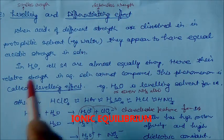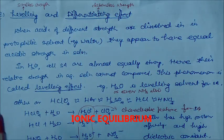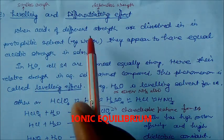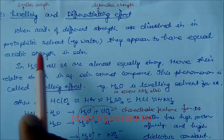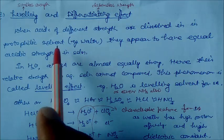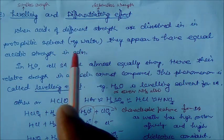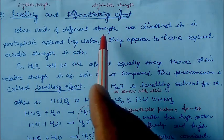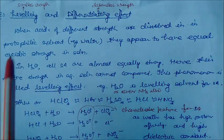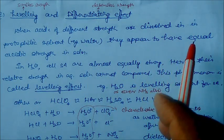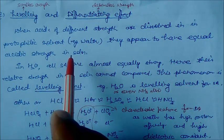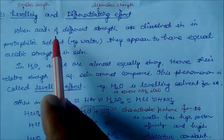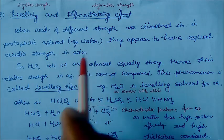Let us see the definition with examples. When acids of different strength are dissolved in a protophilic solvent — suppose water — then they appear to have equal acidic strength in water. This normally happens when you are taking strong acids. In weak acid it will be different.